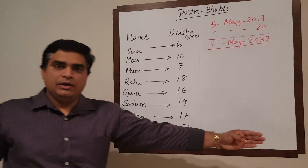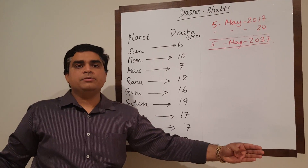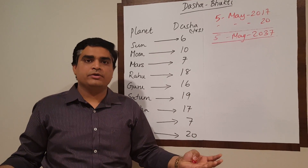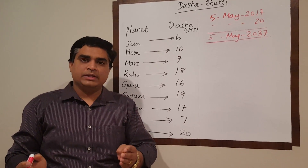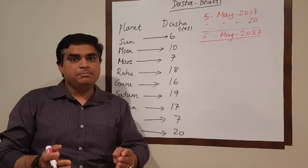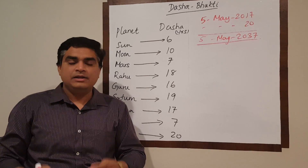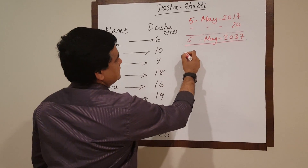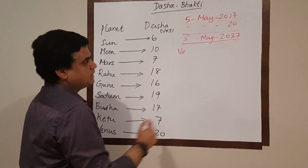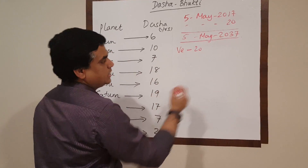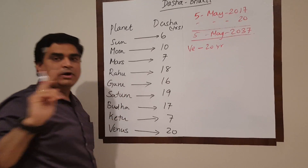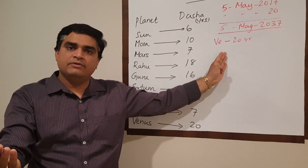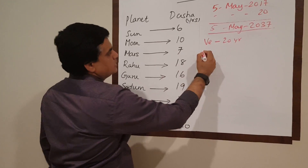Shukra Dasha is quite a long period — a 20-year period. If you predict for this entire 20 years as a single block, people will ridicule you. The most efficient method of prediction is to go into the sub period or Bhukti level. For that, we need to know how the Bhuktis are calculated. Let's get to Shukra Dasha — Venus in English. He has 20 years of his Dasha period. What will be the first sub period in Venus Dasha? Venus itself will be the first sub period.